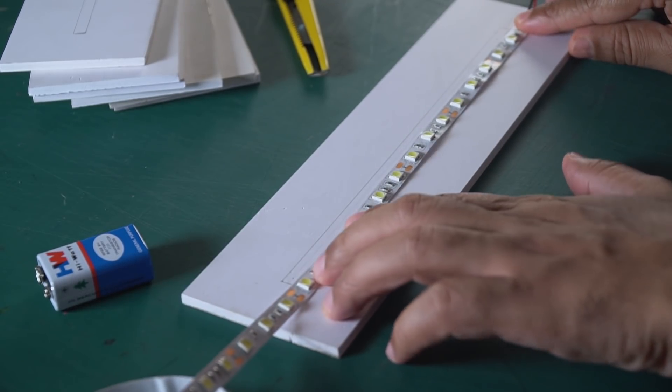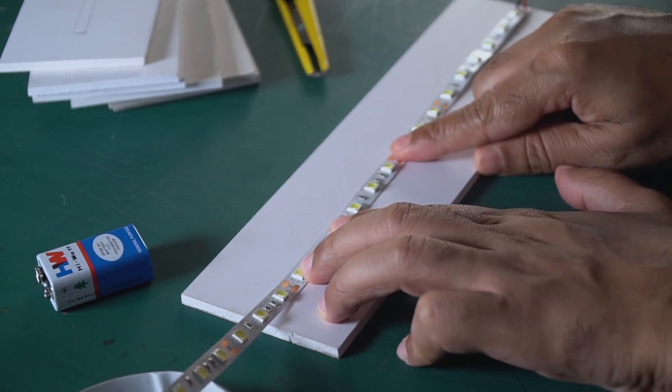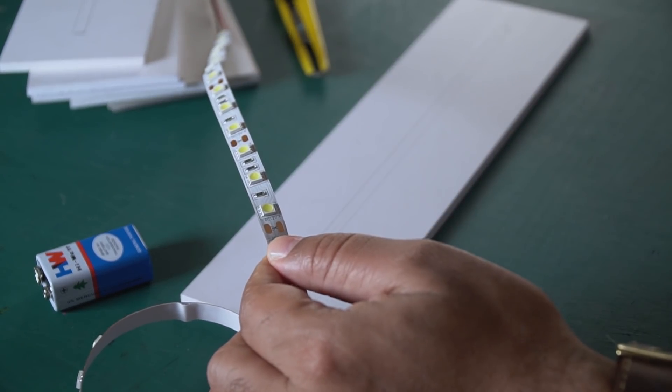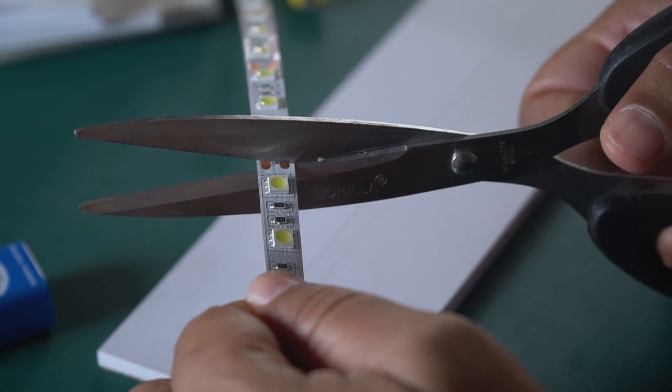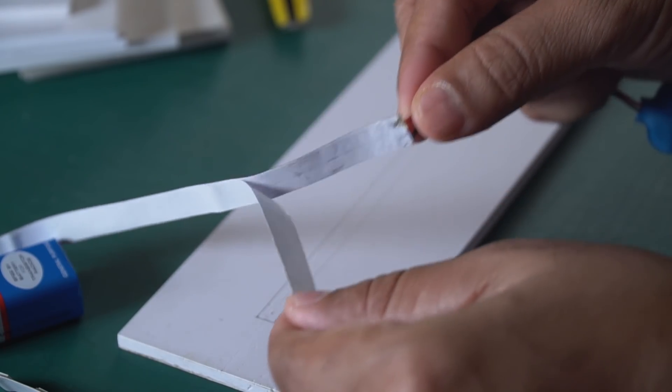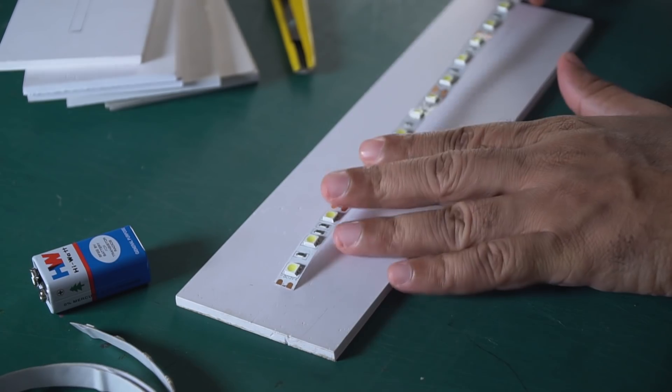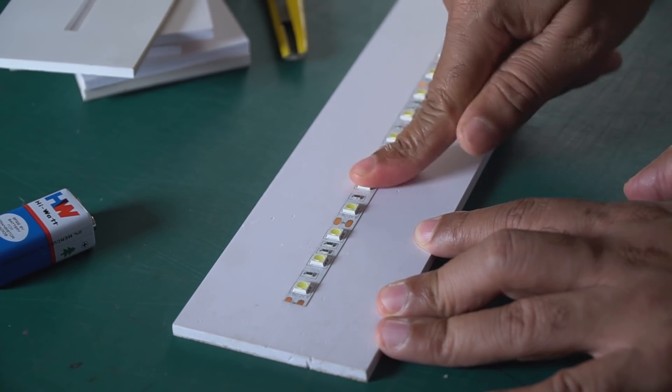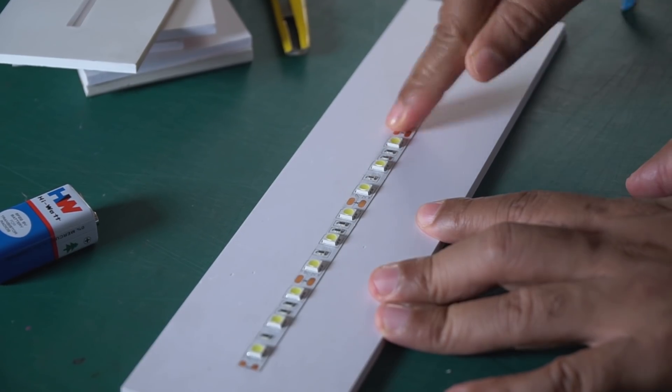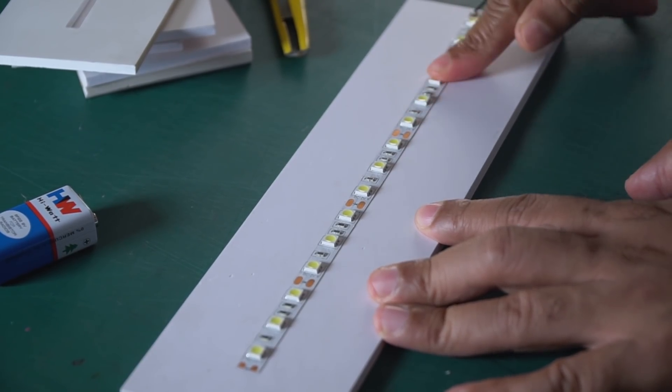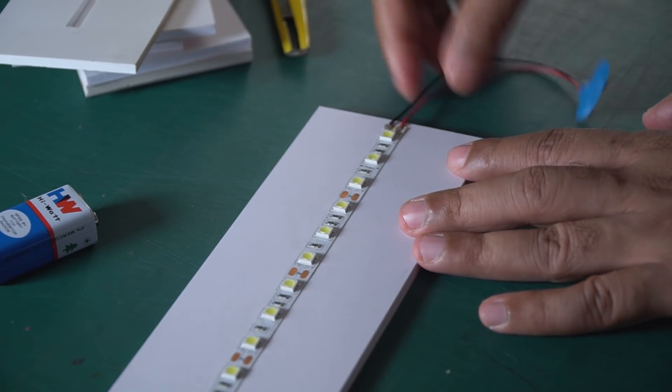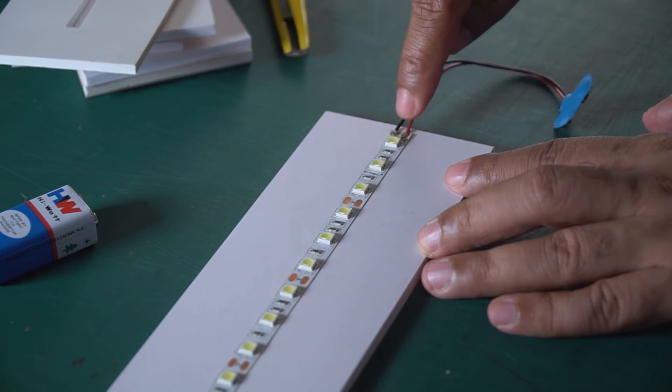All right, let's take a basic measurement. How much do you need? Slit to be according. Here we cut it from here. Let's press it. It's good to get it, but its glue is strong.